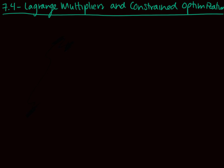We are going to talk today about another way to find maximums and minimums. This section is called Lagrange Multipliers and Constrained Optimization. The idea for this section is we're going to find maximums and minimums again, but we're going to have a constraint.